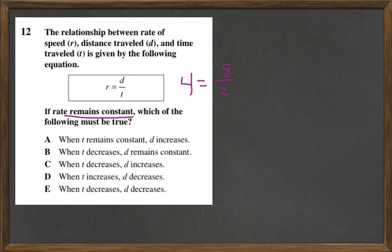Now what this is saying is if this 4 right here is always going to be constant, never changing, the only things that are going to change are this 8 and this 2, but they always have to equal 4. So when T remains constant, which is my 2, that's my T, then D increases.